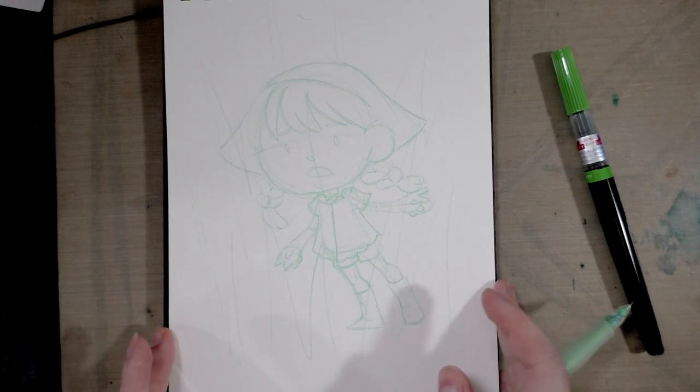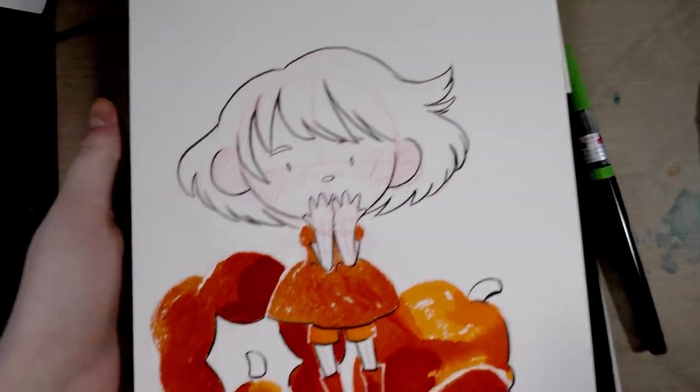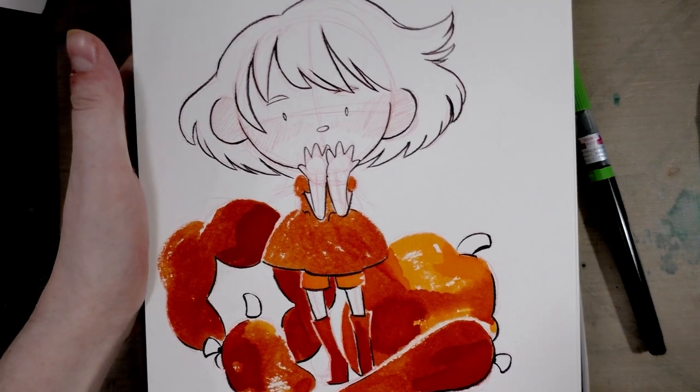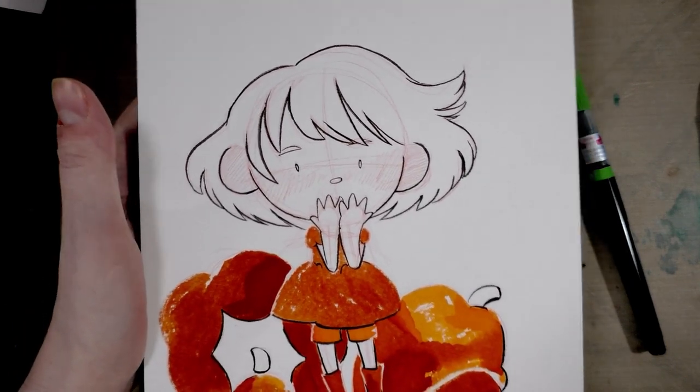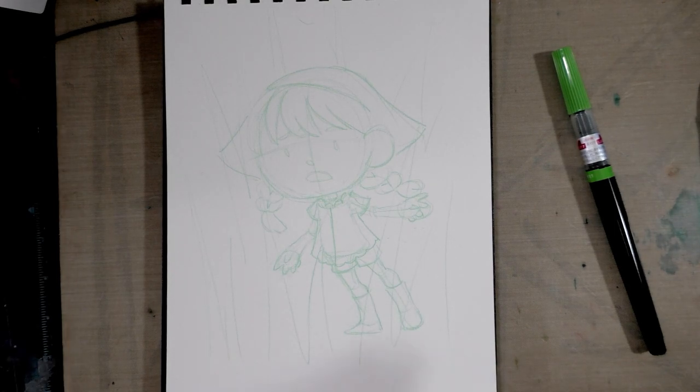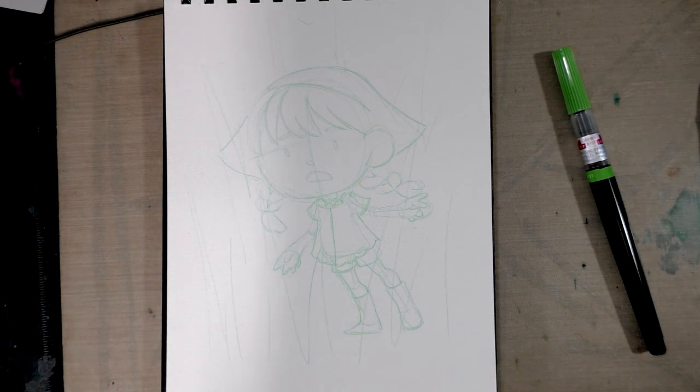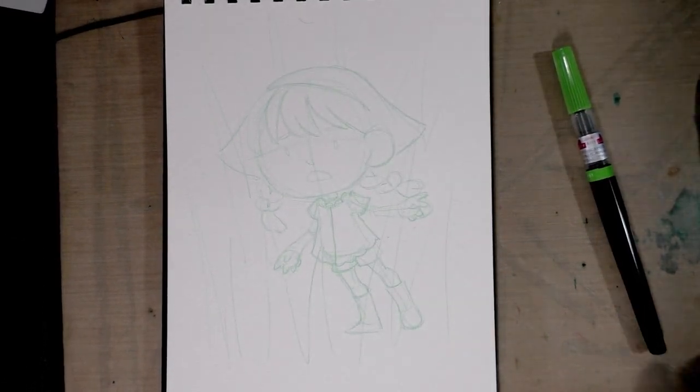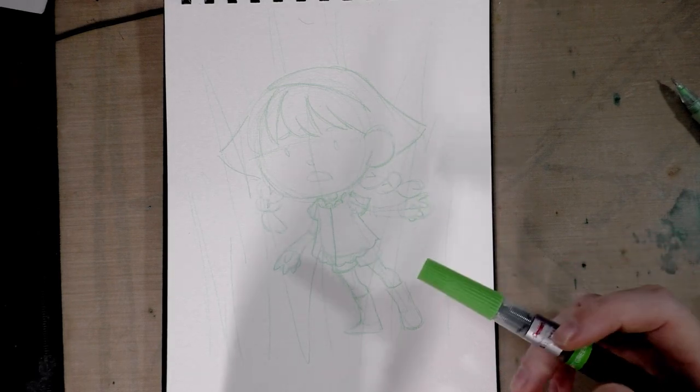This is a Strathmore visual journal book. And the end result is going to end up looking something like this where we're going to use colored inks, black ink and our colored pencil lead to make a really cute simple illustration. So after you've got your illustration sketched, the next thing you're going to want to do is you're going to want to start filling in your color using the lead. I'm sorry, using your pen here.